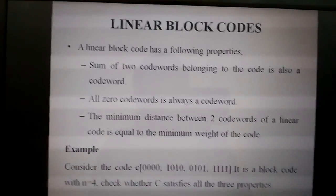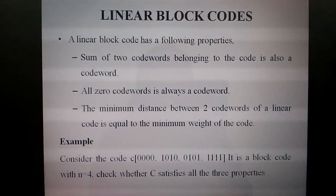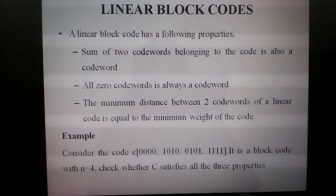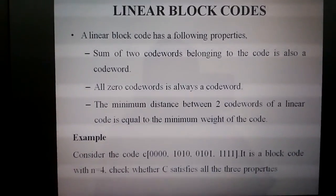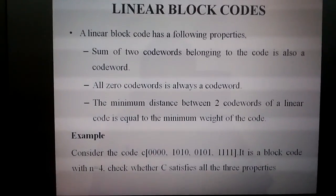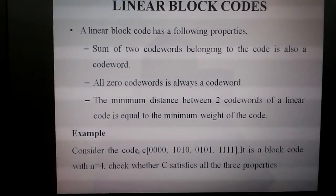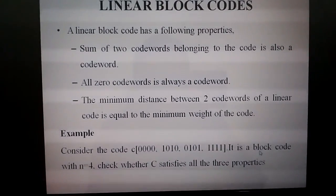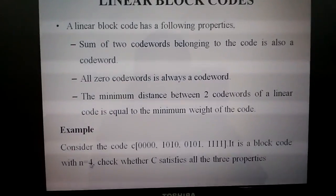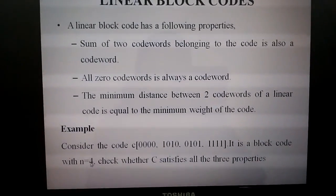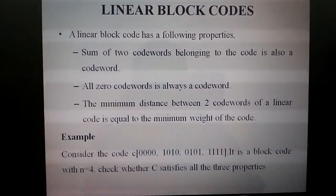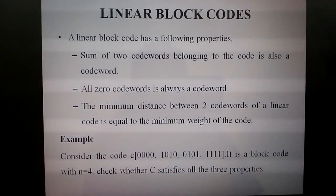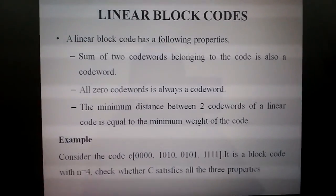To understand this, we need to know what distance and weight of a code are. For example, consider a given set of code words where n equals 4, meaning the number of bits in a code word is 4. We will check whether it satisfies all three properties, and also find the minimum distance and minimum weight.